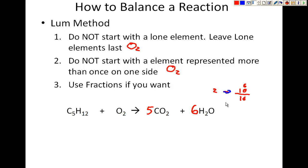On my reactant side I only have 2 oxygens, so these are not balanced. If I put an 8 right here, now there are 16 oxygens on this side and 10 plus 6 equals 16 oxygens on that side. Now everything is balanced. This is how I balance an equation.